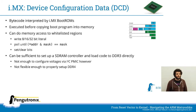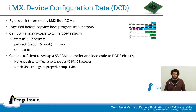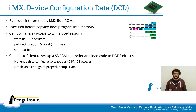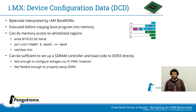IMX device configuration data is an IMX-specific feature — basically bytecode executed by a virtual machine implemented in the boot ROM, running before your actual ARM code. It can do memory accesses, write 8/16/32-bit literals, poll until a bitwise-AND operation is true, and set/clear bits via a mask. This is enough to set up a DDR3 memory controller like found on the IMX6.